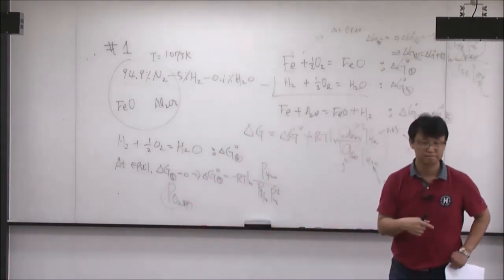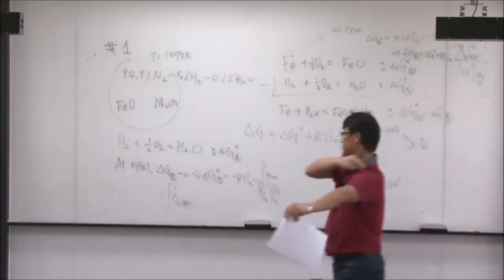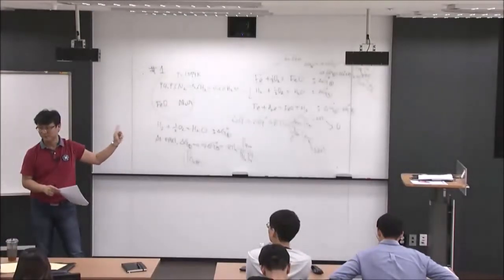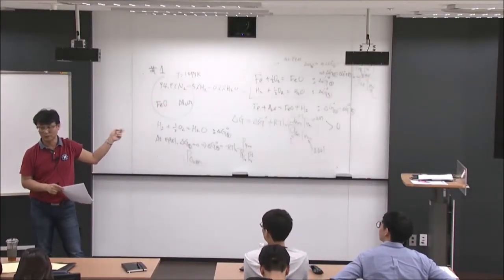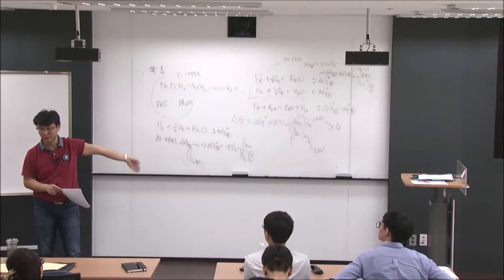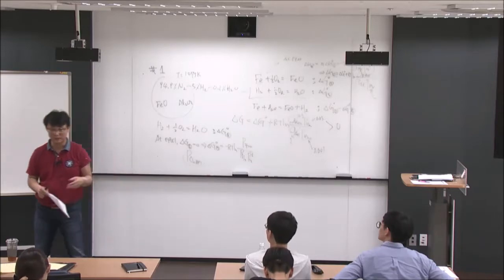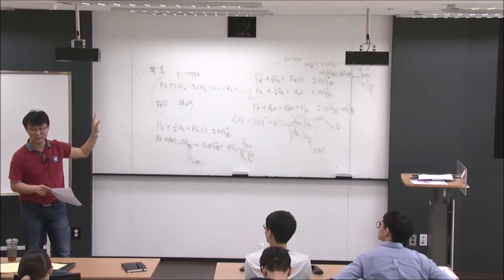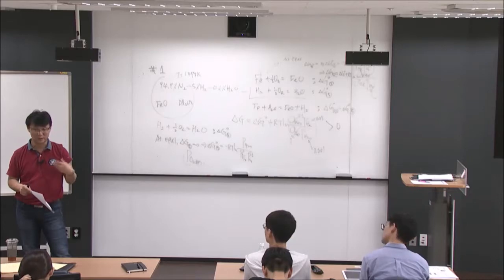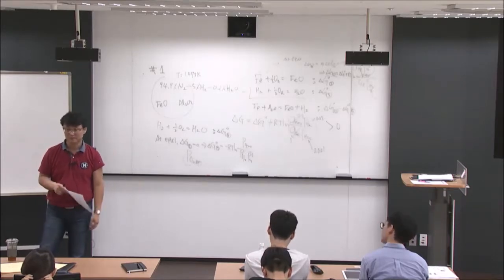You will see a similar question in the future — in the final exam or even the next midterm. Because in this question I assumed FeO and all solids have activity equal to one, except for the gas phase. But now we are learning activity of solid or liquid phase. So I can make exactly the same question but with different activities for iron or iron oxide. Then you have to enter your activity coefficient and mole fraction to calculate activity and see which direction the reaction goes.